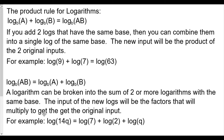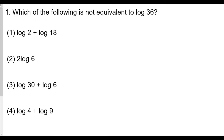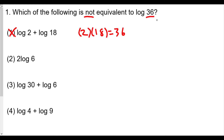Let's see how this helps with the first question. We're looking for which of the following is NOT equivalent to log 36 — always underline the keyword 'not.' For log 2 plus log 18: does 2 times 18 equal 36? Yes, so it can't be this one; we're looking for where the product of the inputs does not equal 36.